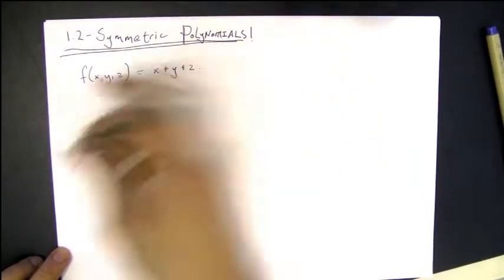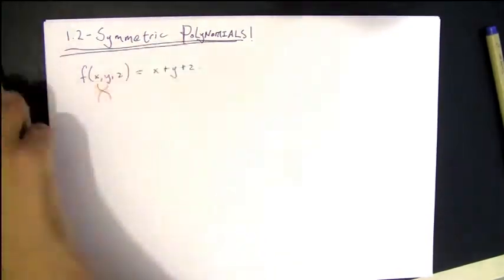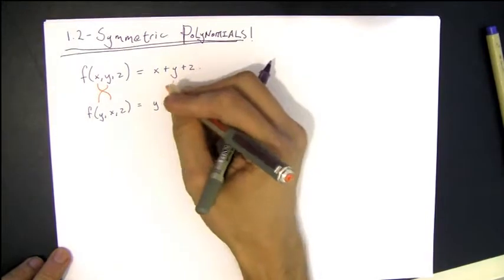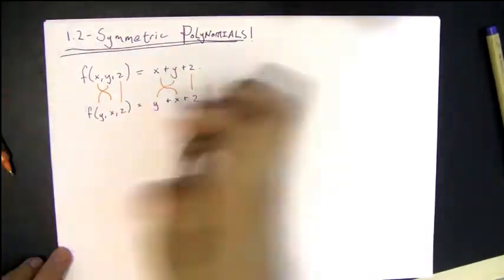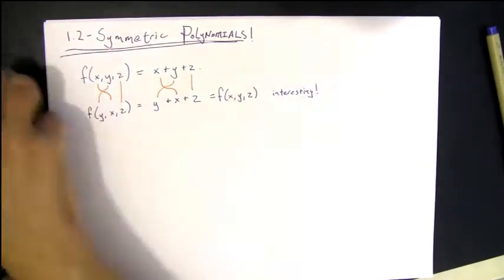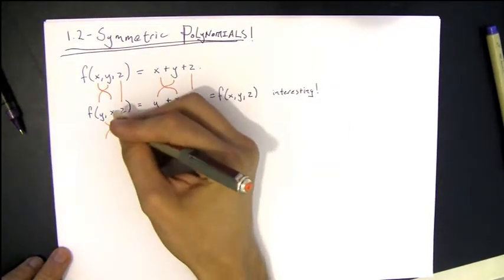So imagine you have a polynomial in, let's say, three variables, x plus y plus z, and you were to switch the x and the y. So then your x plus y plus z becomes y plus x plus z, and thanks to the fact that addition is commutative, that's the same as x plus y plus z.